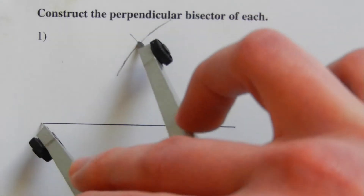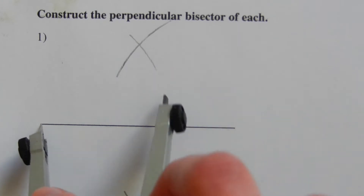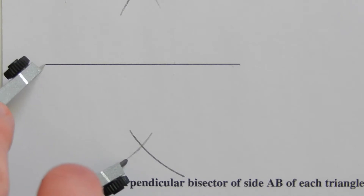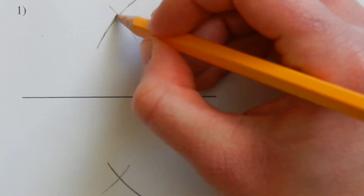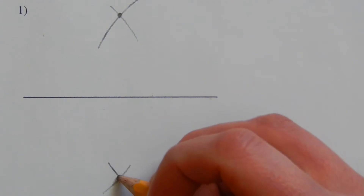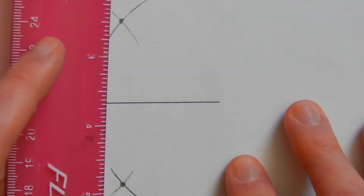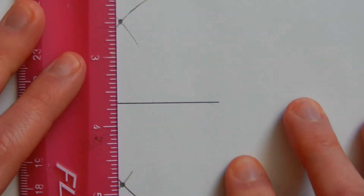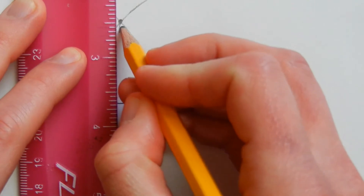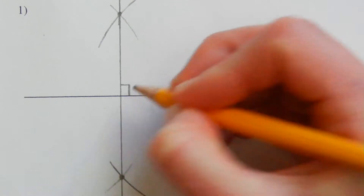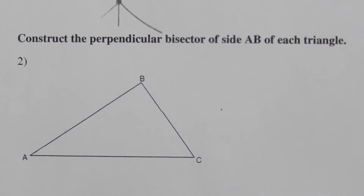We're going to do a tick mark extending up until we see that intersection, and then a tick mark going down until we see that intersection. Where those two marks or arcs meet, those will be the endpoints that go through our perpendicular bisector. Remember, to create a line we just need two points, so we'll connect those two points to form that perpendicular bisector.